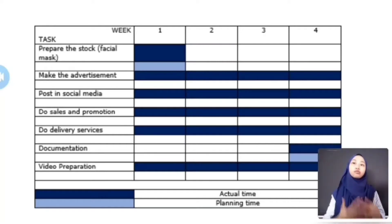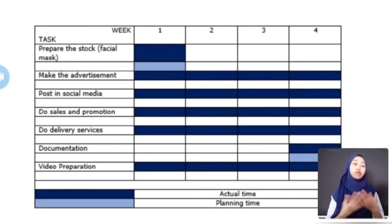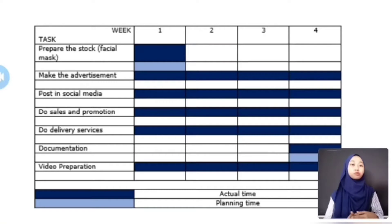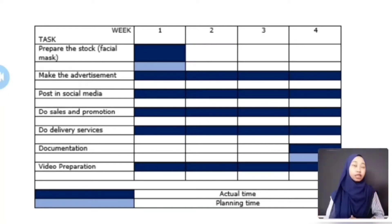By doing this, we can easily get customers and sales. For week 1, we can sell 7 sets of facial masks. For weeks 2, 3, and 4, we do the same business activity which is advertising, posting on social media, doing sales, and delivery services.